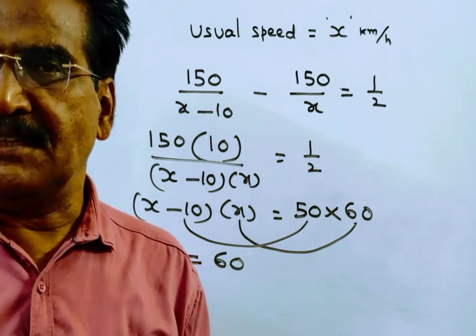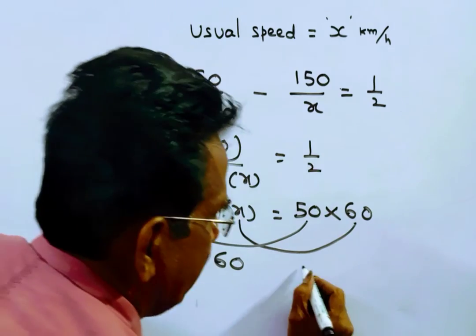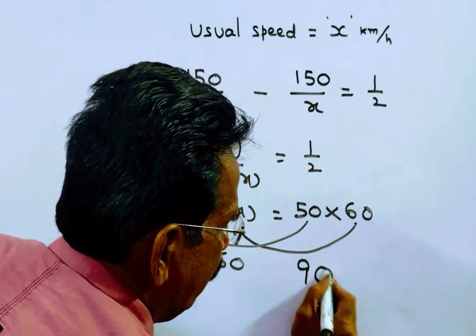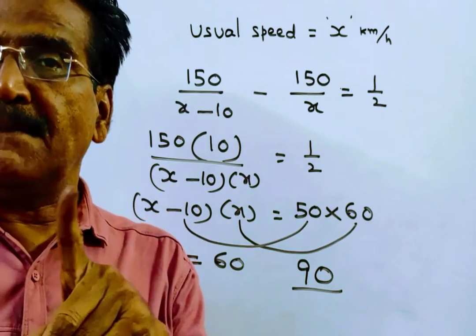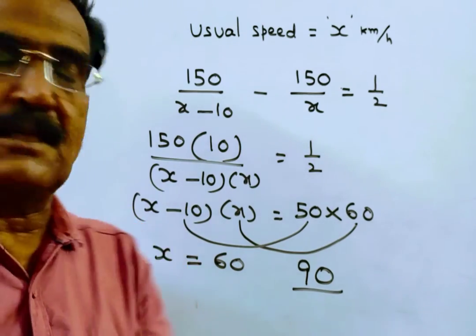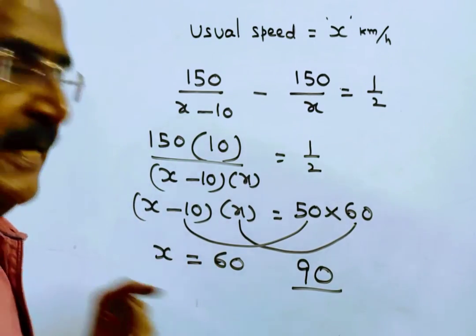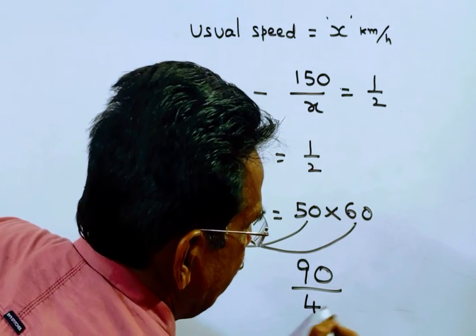Now the question is: the time taken to travel 90 km if the speed is 15 km/h slower than his usual speed. So 60-15 = 45 km/h.